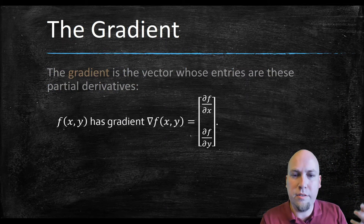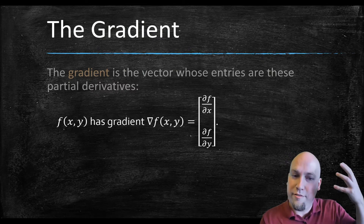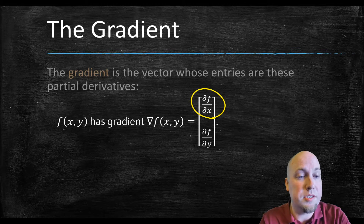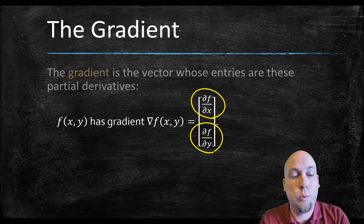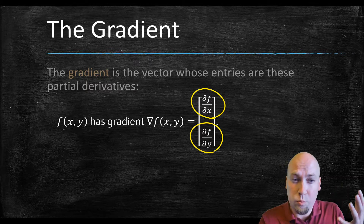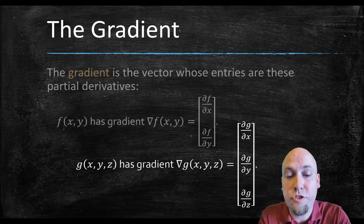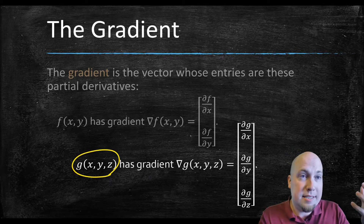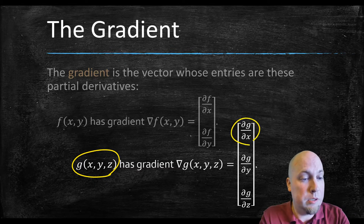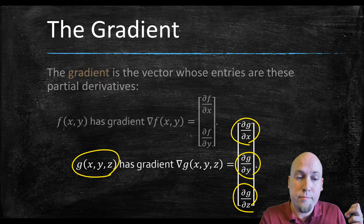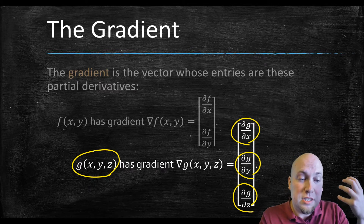For a two-variable function f(x, y), there are two partial derivatives because there are two variables: you can take the derivative with respect to x or with respect to y. For a function of three variables g(x, y, z), you get three partial derivatives: del g by del x, del g by del y, and del g by del z. In general, a function of n variables has n partial derivatives. The gradient is the vector you get by taking all of these partial derivatives and throwing them into a vector.